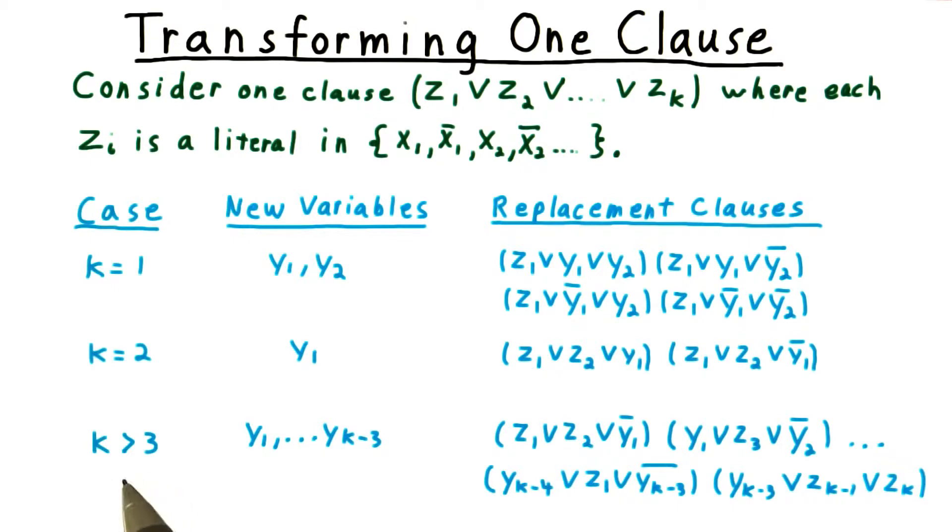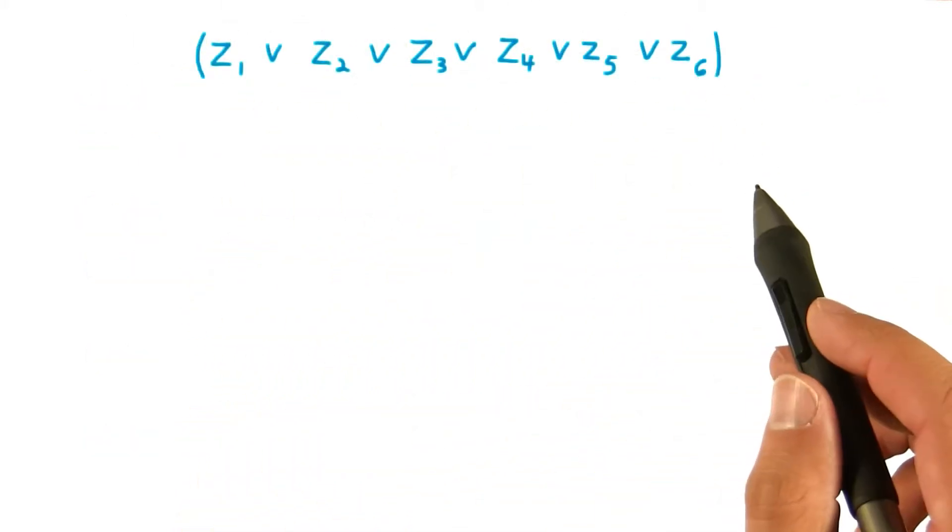Lastly, we have the case where K is greater than three. Here, we introduce K minus three variables and use them to break up the clauses according to this pattern. Let's illustrate this idea with an example. Consider this six literal clause here.